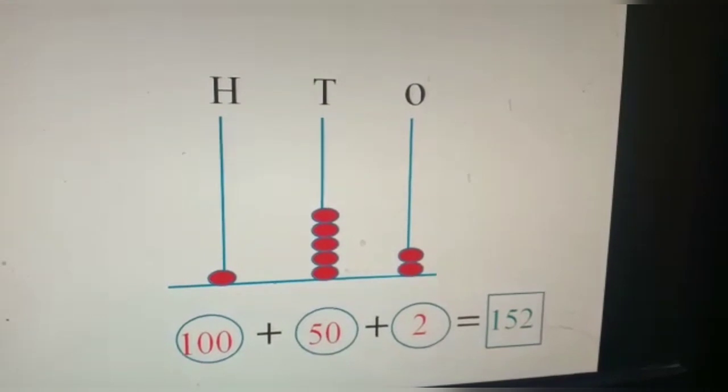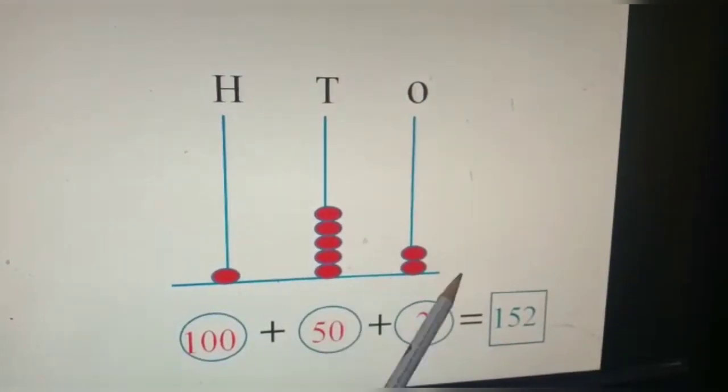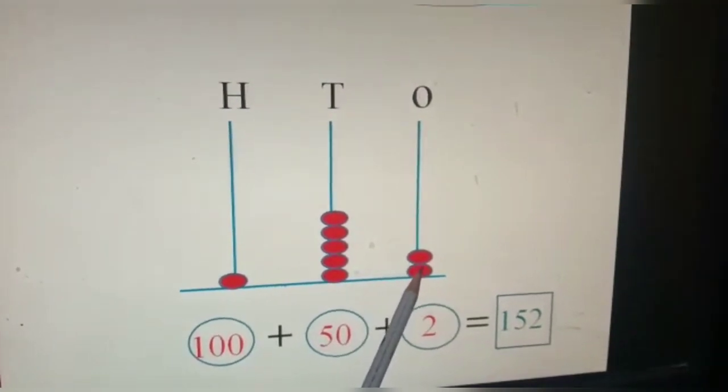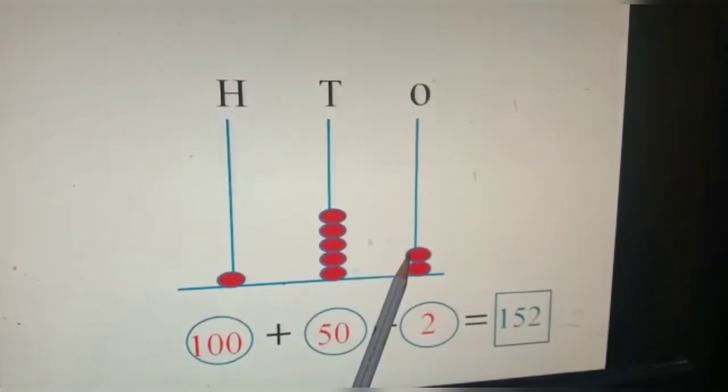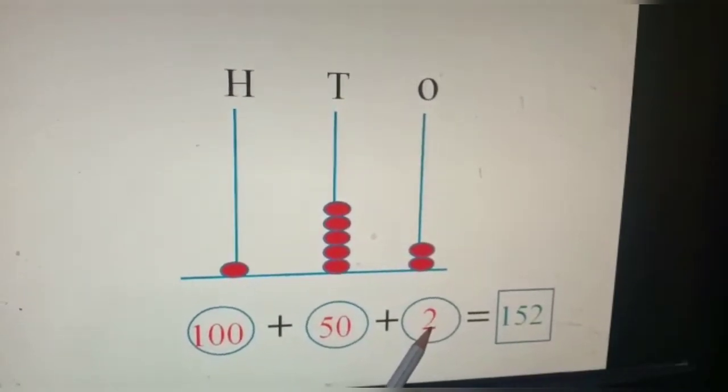Now, let's count the beads. Let's begin with the ones place. In the ones place, we have one, two. Two beads. So, we write here, two in the ones place.